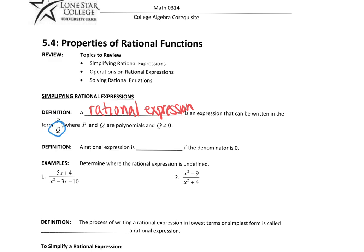And here's the most important thing. This bottom polynomial Q cannot be equal to zero. And that's because division by zero is impossible. So that's the main thing we're going to look for. We want to make sure that that bottom polynomial does not equal zero.